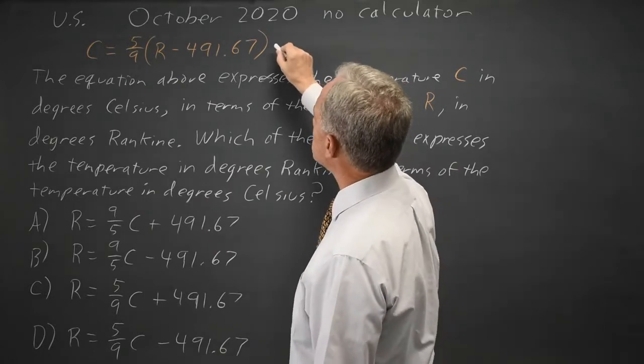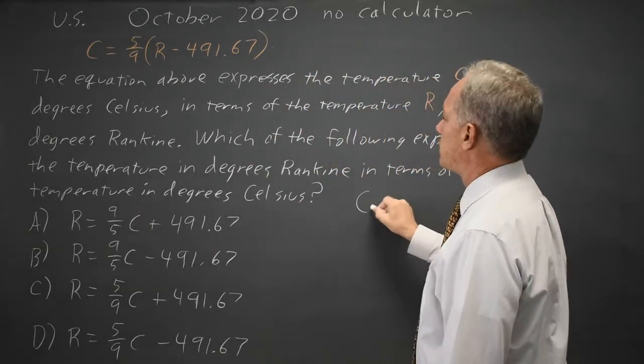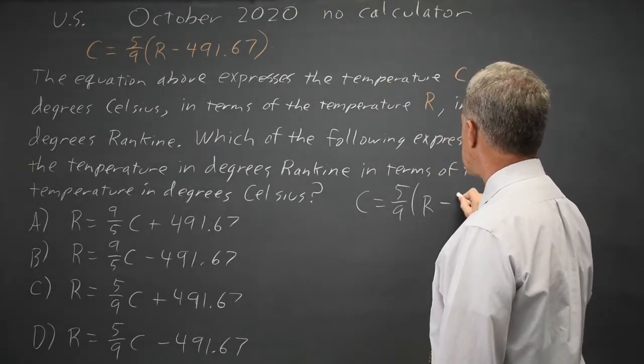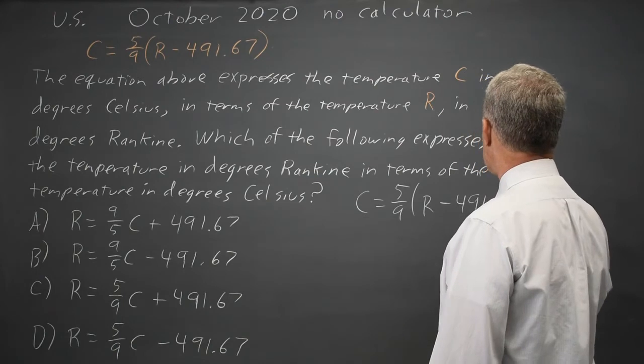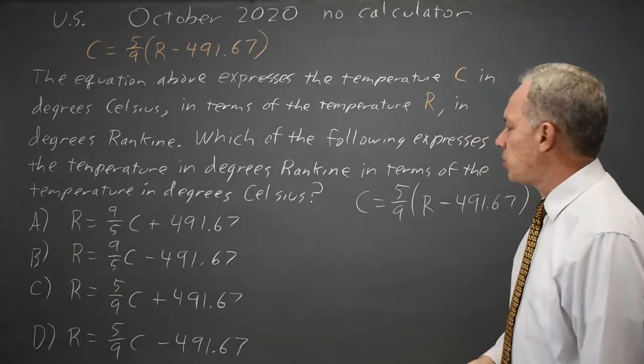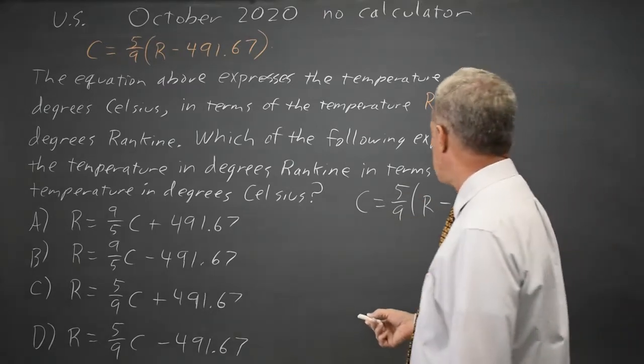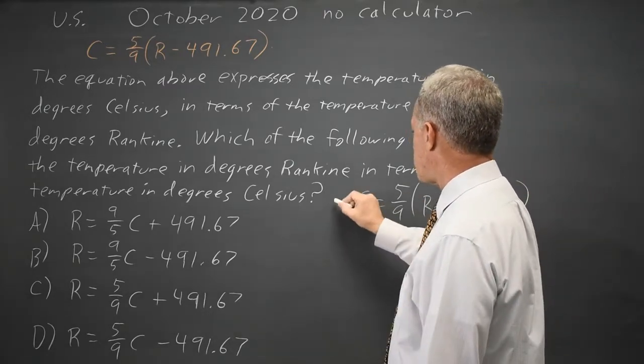To solve this for R, we have C equals 5 ninths times R minus a constant. I'll multiply both sides by 9 fifths because 9 fifths times 5 ninths equals 1, and that will help us get a constant by itself.